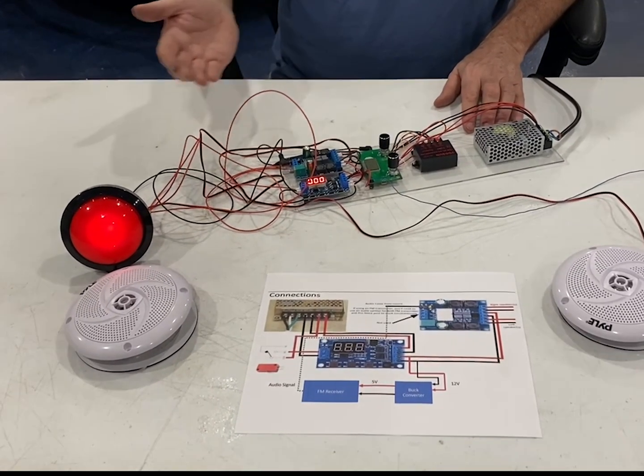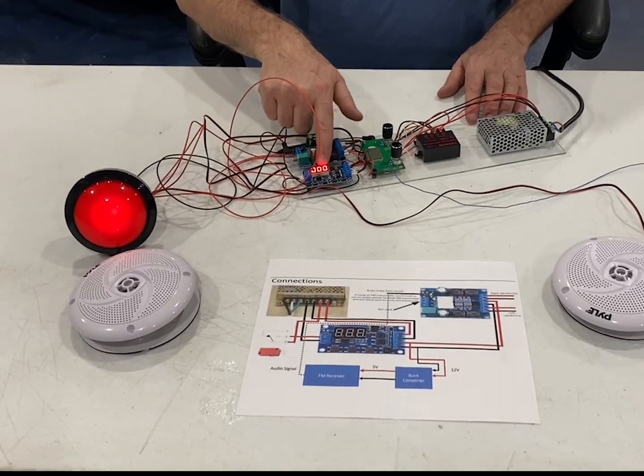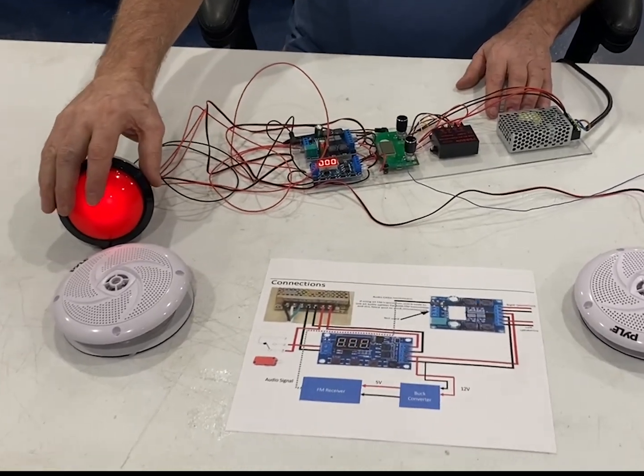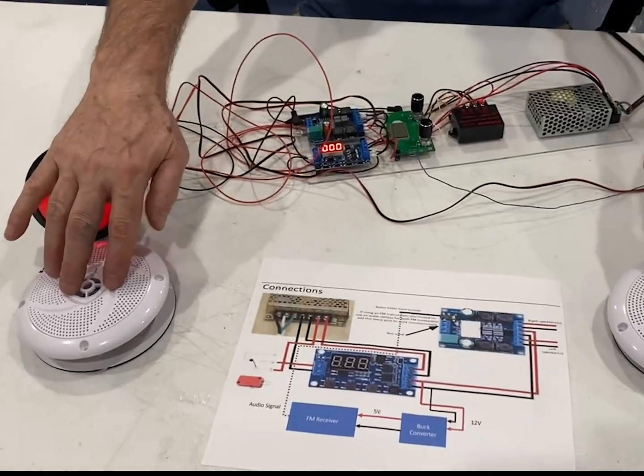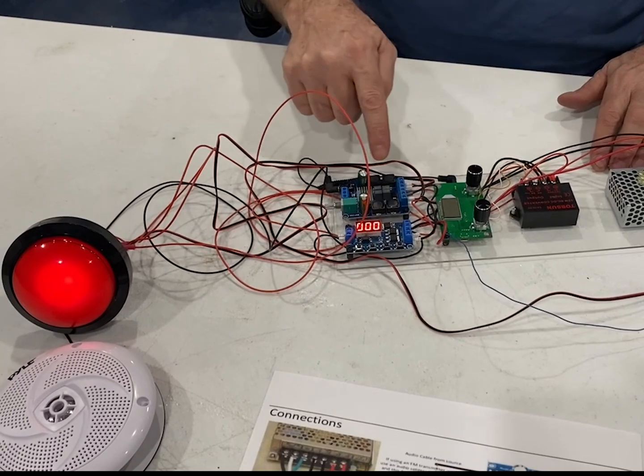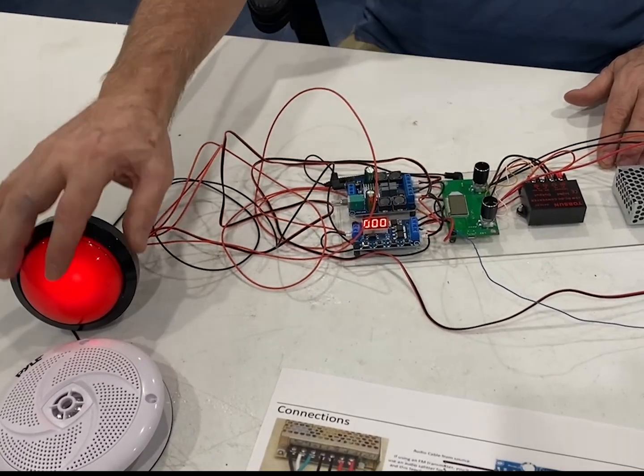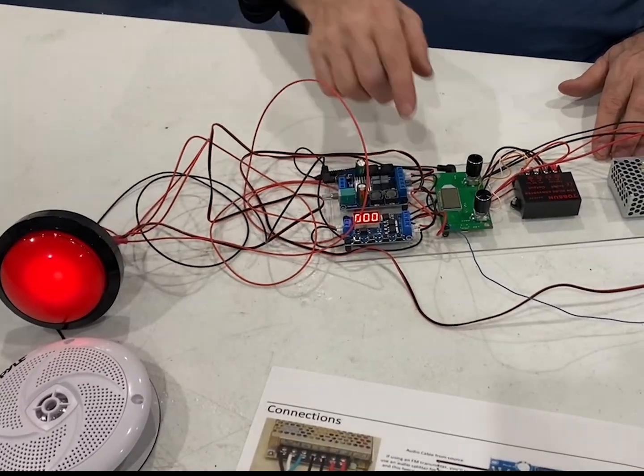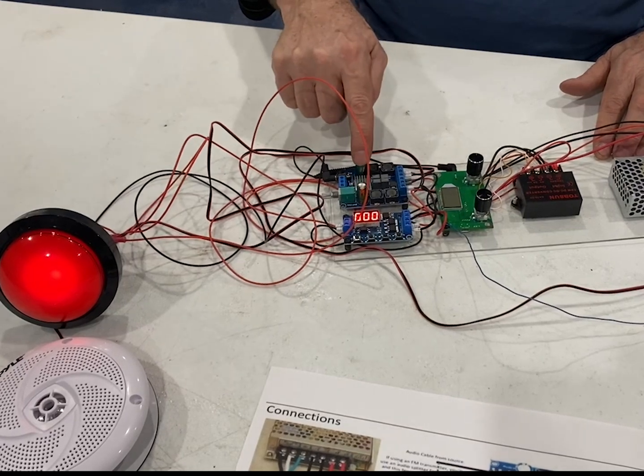As you can see, the system is functioning. We have power on the timer. We have power on the push for sound and the speakers are all wired up and ready to go. You don't see power on the tuner or the FM receiver because it doesn't come on until I press the button. When I press the button, the tuner comes on and the amplifier comes on.